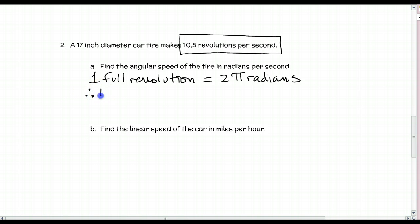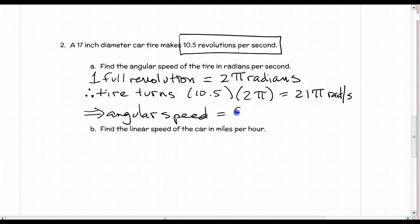The tire moves 10.5 revolutions in one second, and one full revolution equals 2π radians. The tire turns 10.5 times 2π radians, which equals 21π radians per second. Notice the units: radians, which is an angle, and seconds, so theta over time. Our angular speed is 21π radians per second.